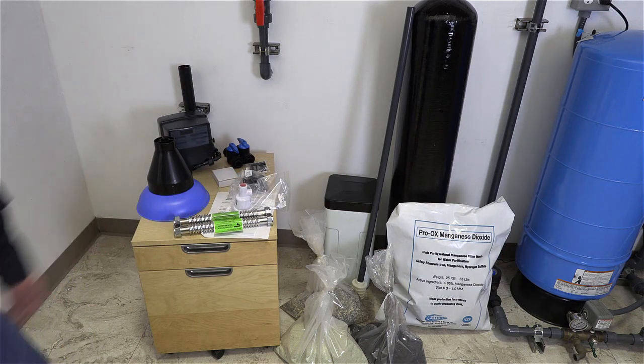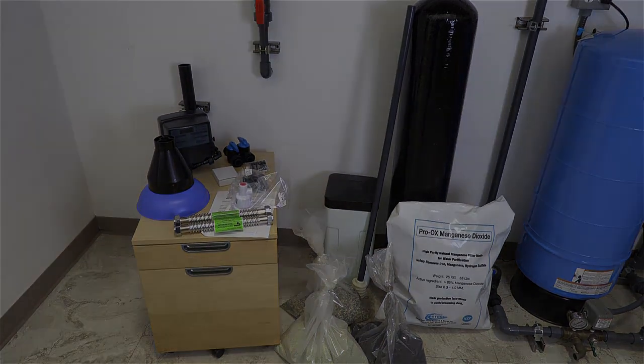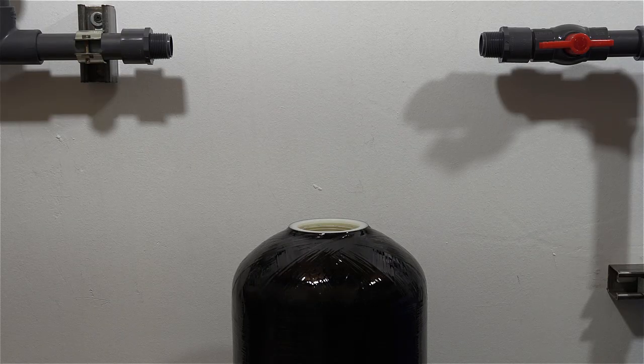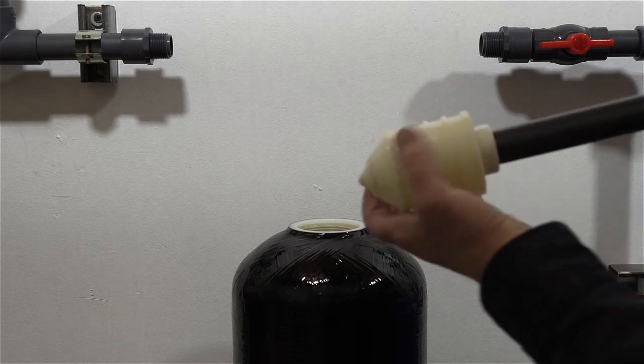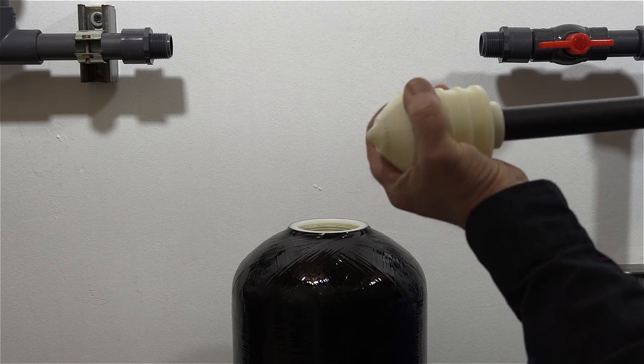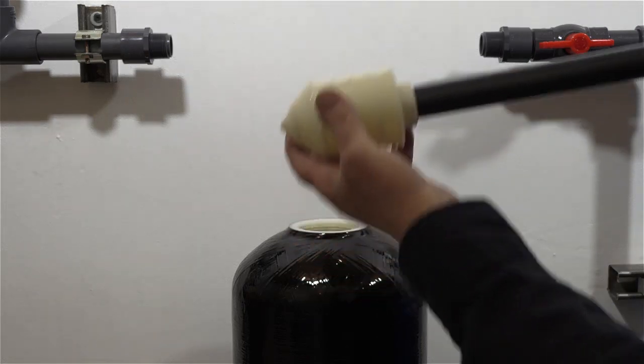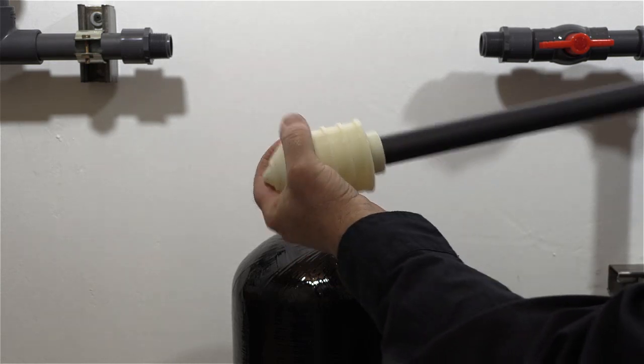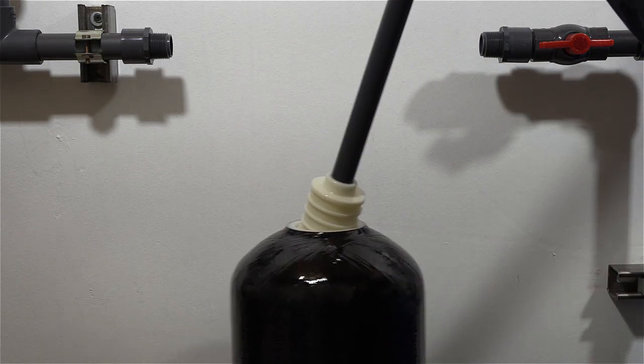Before putting the D tube down into the media tank, we want to double-check that the bottom screen didn't vibrate loose during transportation. Give it a good grab and make sure it's not loose prior to installation.